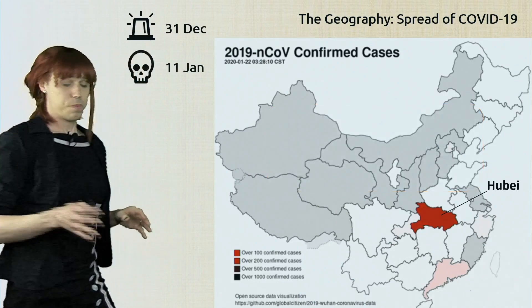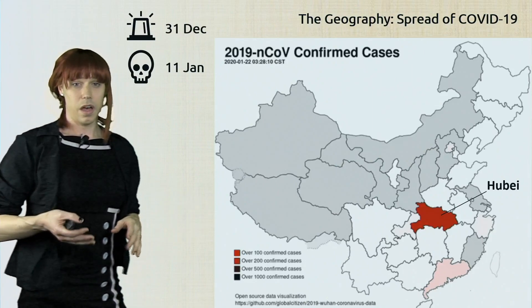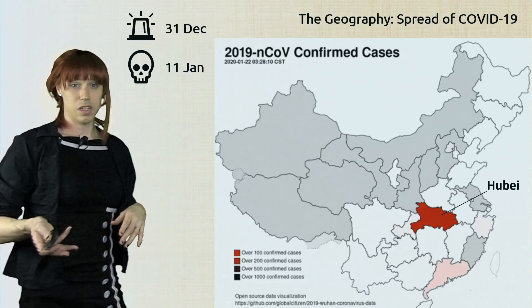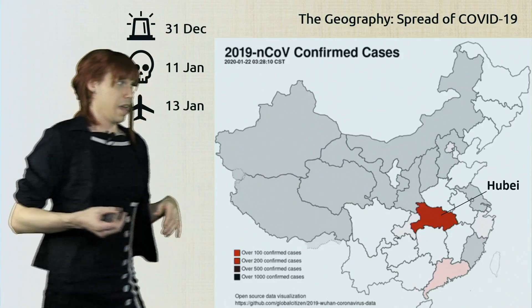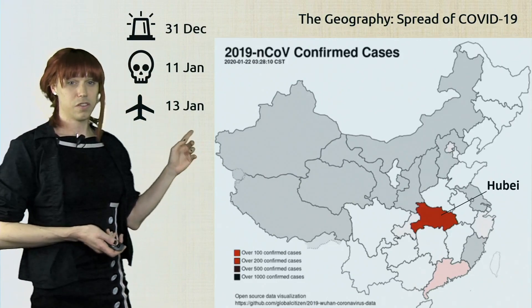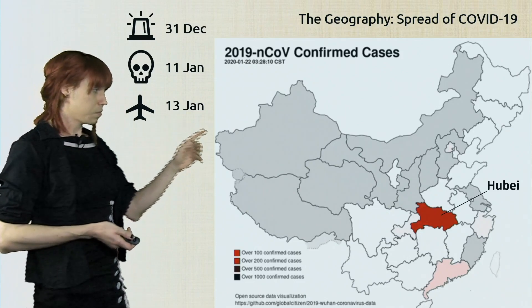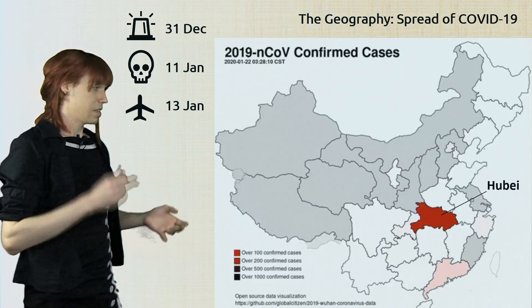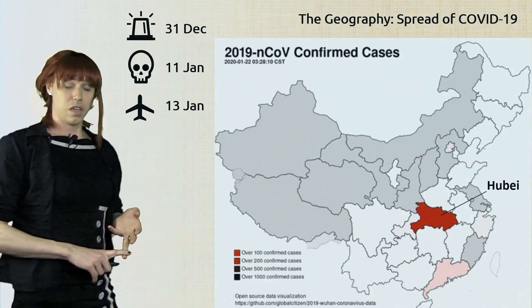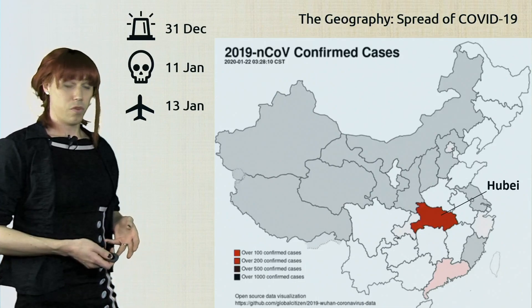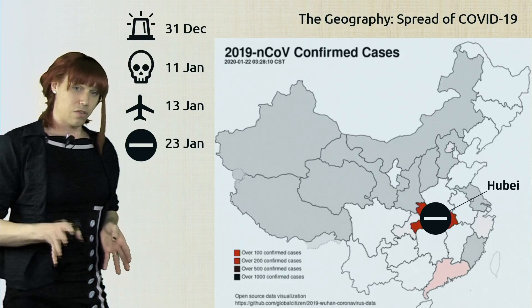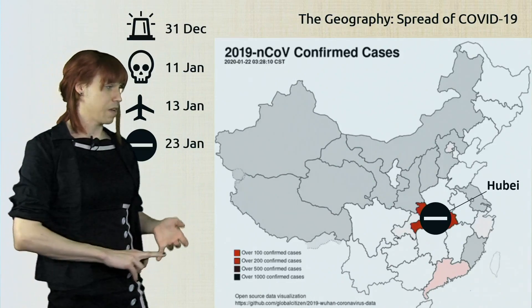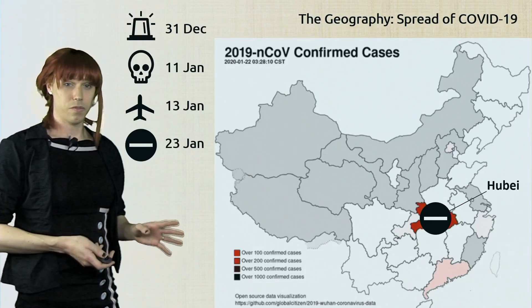On the 11th of January we had the first death — a 60-year-old man who regularly traveled to the market in Wuhan where the virus is thought to have originated. Just a couple of weeks after the emergency was declared, we started having first cases outside China. On the 13th of January there was the first case in Thailand. Then on the 20th of January, the WHO officially declared it had been detected in other countries, including Thailand and the United States on the 21st. On the 23rd of January the Wuhan authorities shut down buses, subways, ferries, and started cancelling planes and trains.